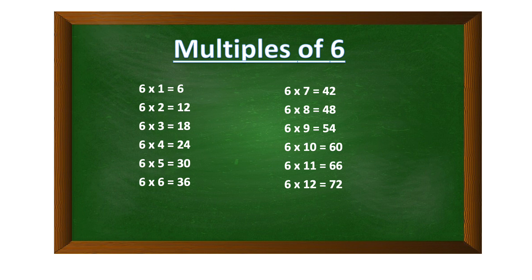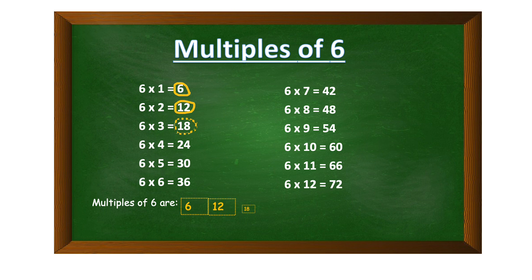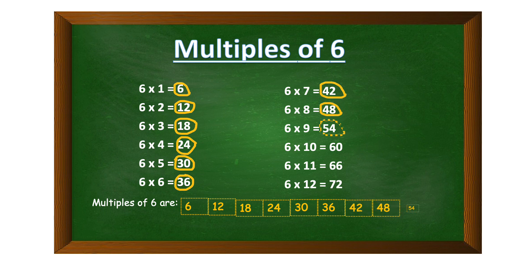Six times nine is fifty-four, six times ten is sixty, six times eleven is sixty-six, six times twelve is seventy-two. Multiples keep going on and on — they don't stop. So multiples of six are: six, twelve, eighteen, twenty-four, thirty, thirty-six, forty-two, forty-eight, fifty-four, sixty, sixty-six, seventy-two, and so on.